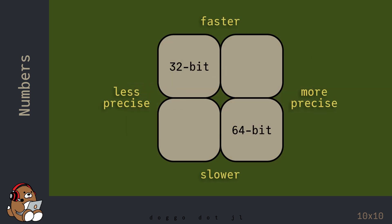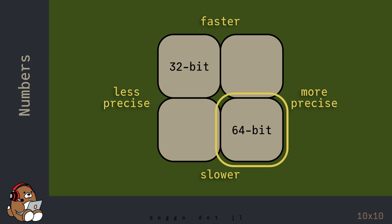The difference between 32-bit and 64-bit comes down to a trade-off between performance versus precision. 32-bit numbers require less memory, so applications using 32-bit numbers will run faster. But because 32-bit numbers use less memory, they are also less precise, which may lead to errors. 64-bit numbers require more memory, but allow your calculations to be more precise, making them suitable for numeric and scientific computing applications.